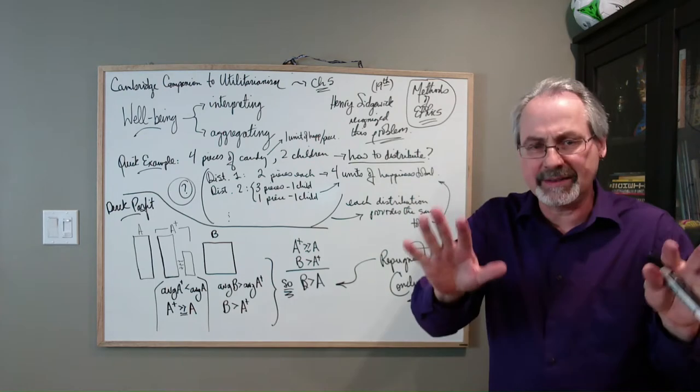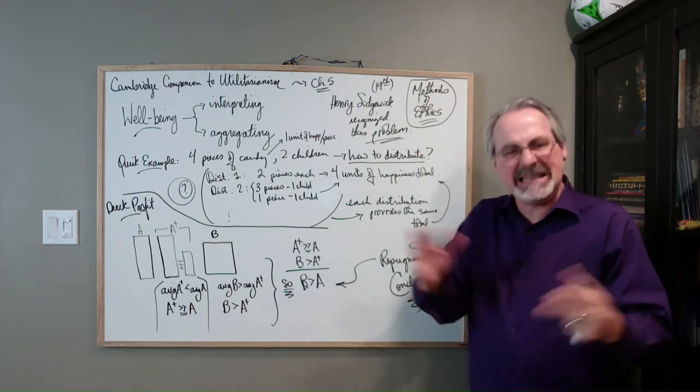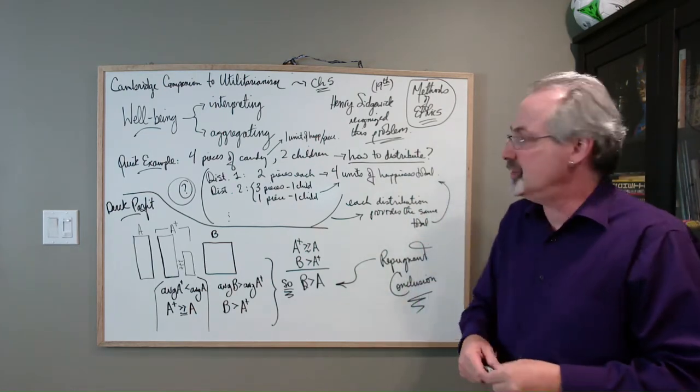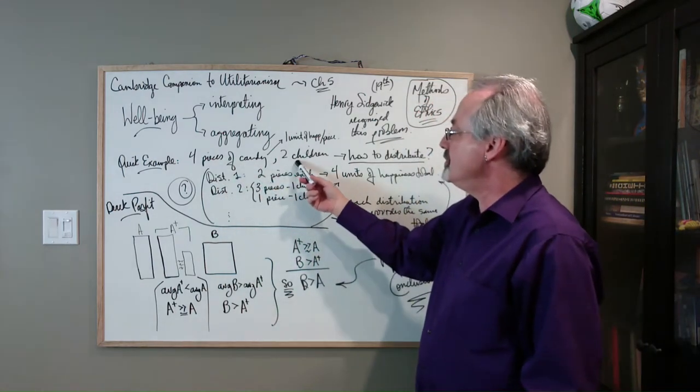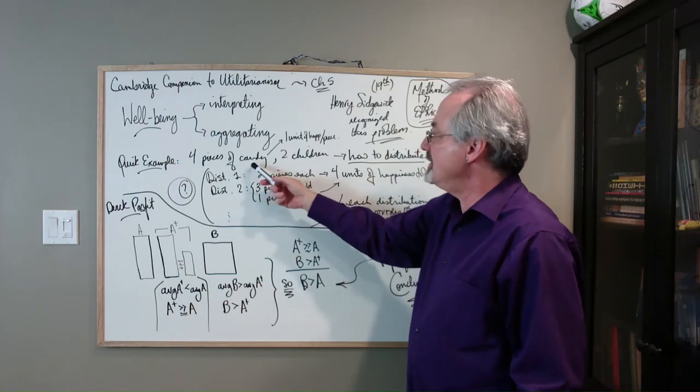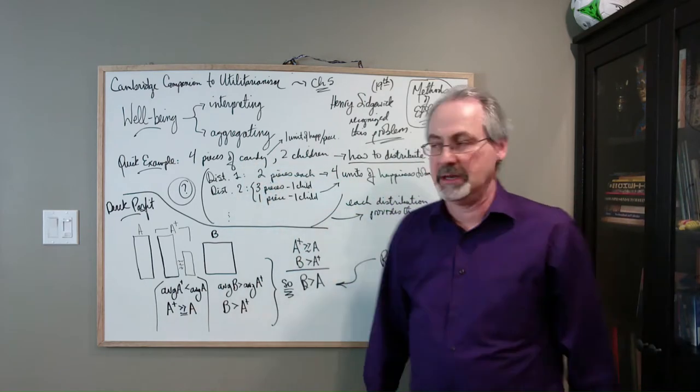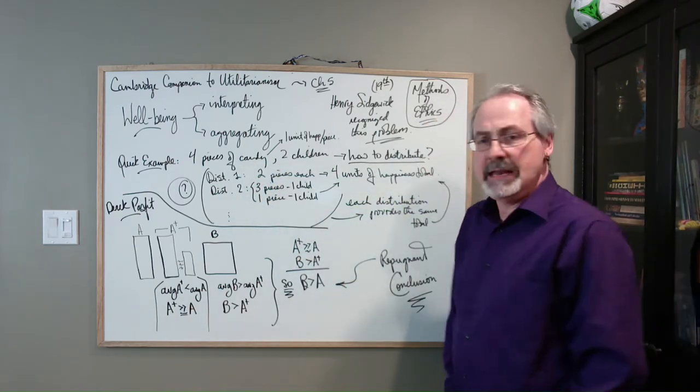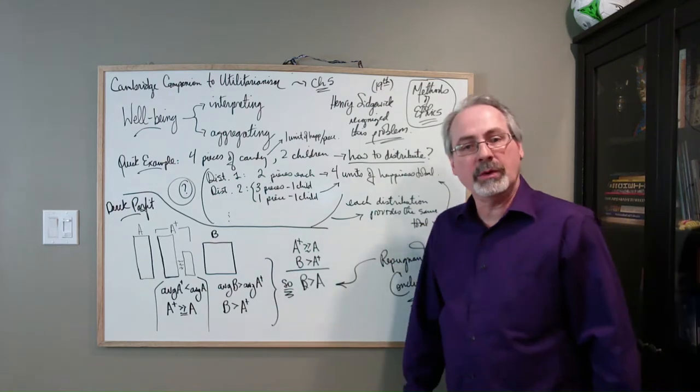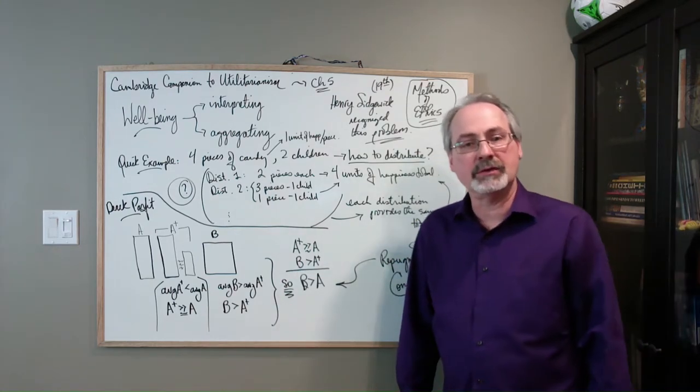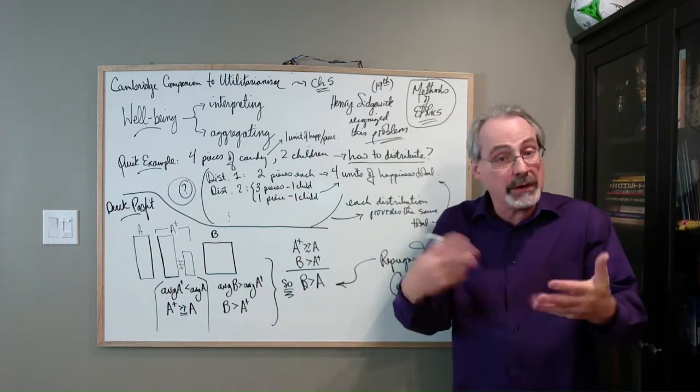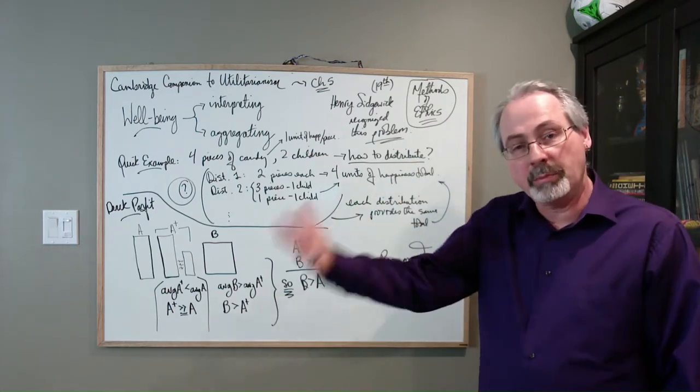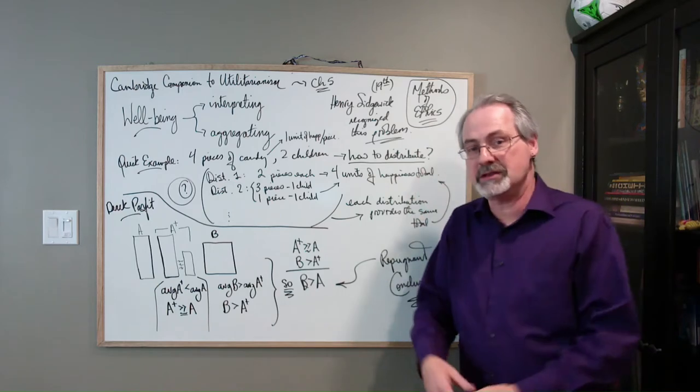Now, here's a quick example. This isn't Sidgwick's example, but it illustrates what he was concerned about. Suppose you have four pieces of candy, and you have two children, and each piece of candy provides a unit of happiness, and you're going to parcel them out. That is, you're going to parcel the candy out to these kids. How are you going to distribute it?